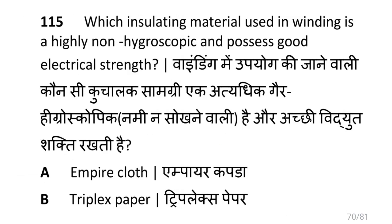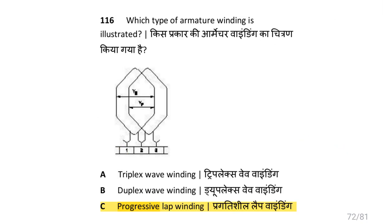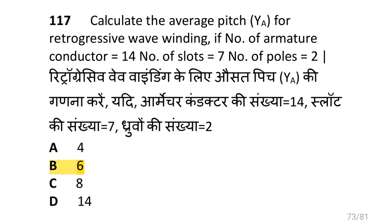Which insulating material used in winding is highly non-hygroscopic and possesses good electrical strength? That is Milenax paper. Which type of armature winding is illustrated? That is progressive lap winding. Calculate the average pitch for retrogressive wave winding if the number of armature conductors is 14, number of slots is 7, and number of poles is 2. After calculating, the average pitch will be 6.